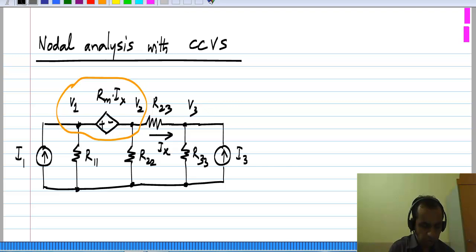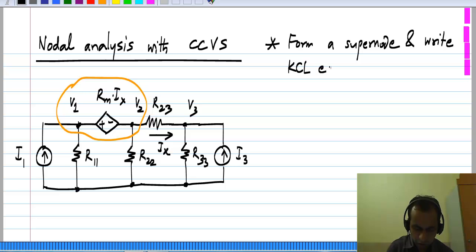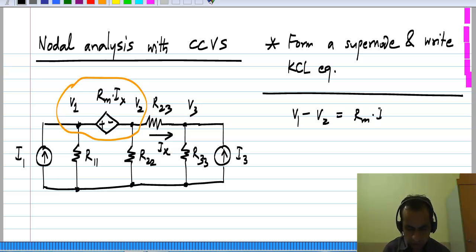Following the usual procedure you form a super node and write KCL equation. Now, because you combine two nodes into a super node you have lost one equation, but you have the definition of the voltage source. So V 1 minus V 2 is R m times I x.